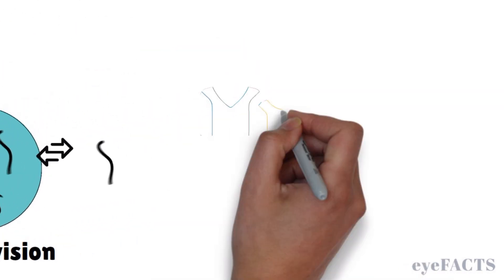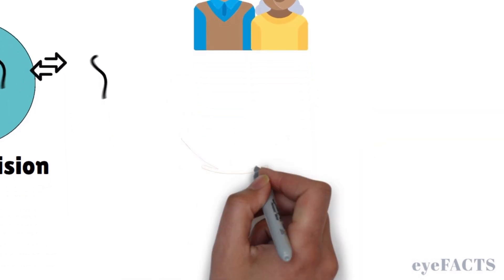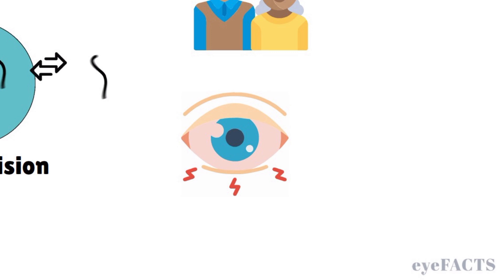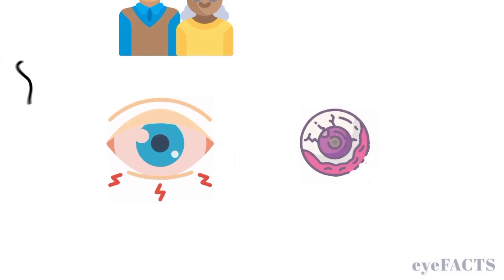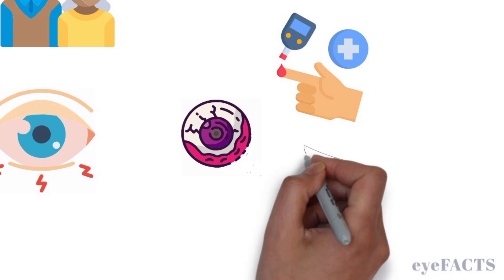In addition to aging, floaters can also be caused by other things. Inflammatory conditions like uveitis release inflammatory debris into the vitreous. Also, bleeding inside the eye, which can often be caused by diabetic retinopathy or trauma, can result in blood cells floating inside the vitreous and casting shadows on the retina.